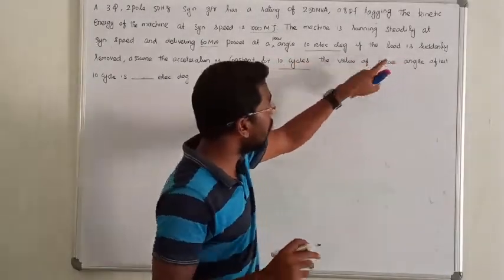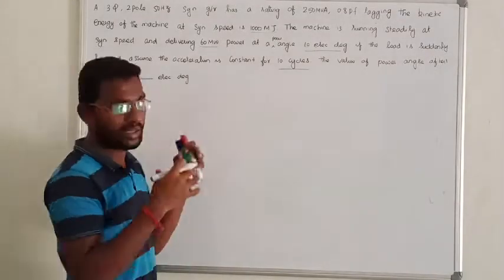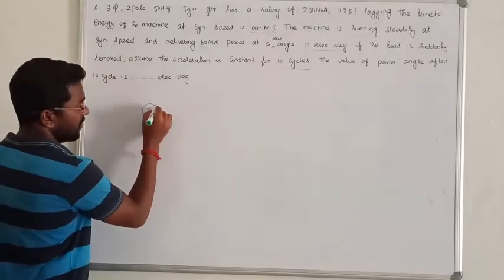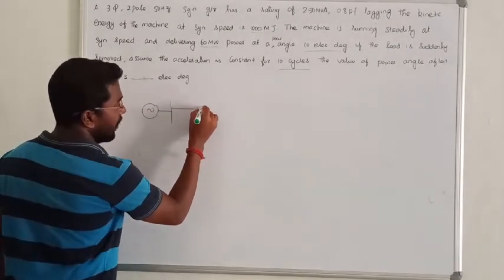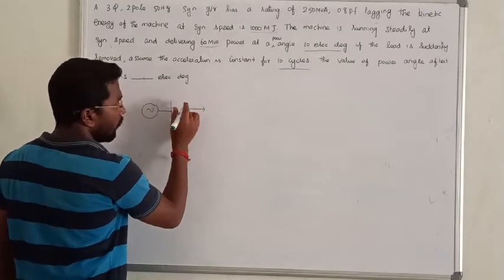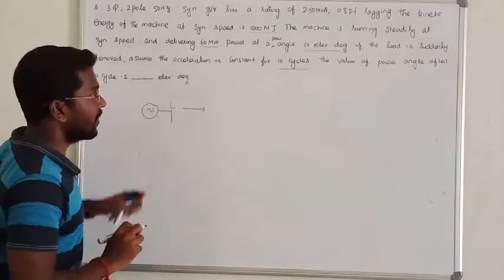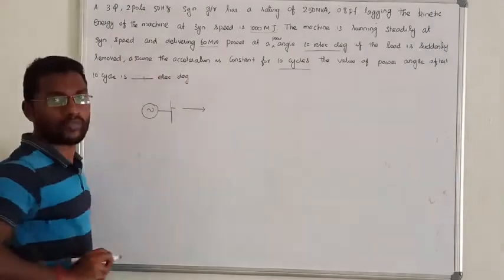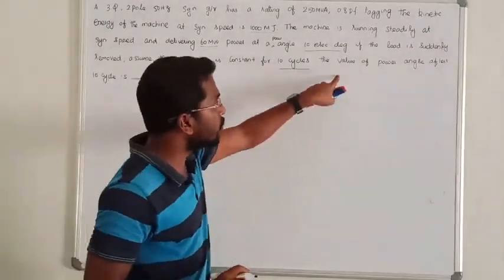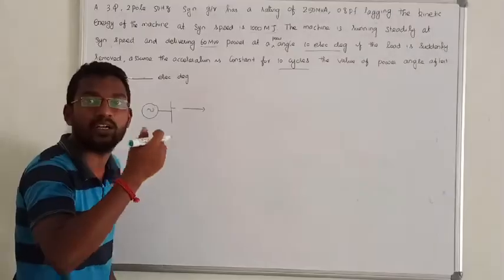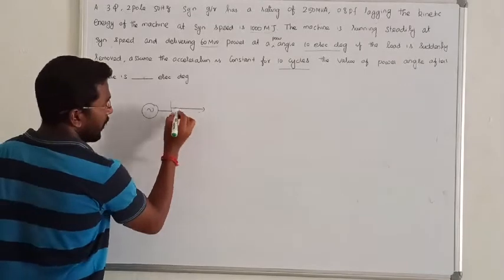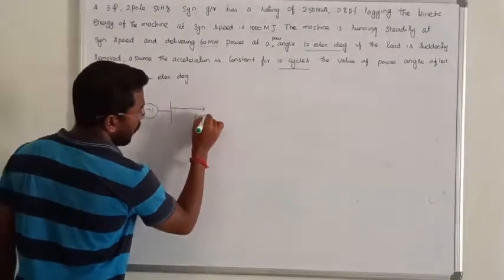If the load is suddenly removed, there is an alternator delivering power to some loads. When we disconnect the load from this alternator suddenly, the acceleration of the alternator remains constant for the next 10 cycles. So the value of the power angle after 10 cycles is what? That is the question. Let us see the solution. The initial power is 60 MW.